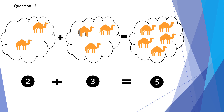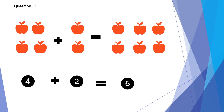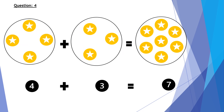Question number three: four apples plus two apples equals six apples. In the number form, four plus two equals six. Question number four: four stars plus three stars equals seven stars. So in the number form, four plus three equals seven.